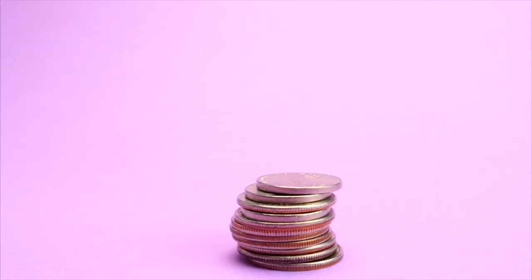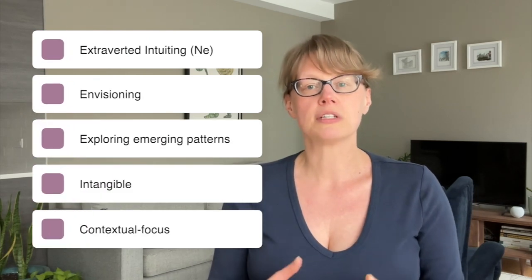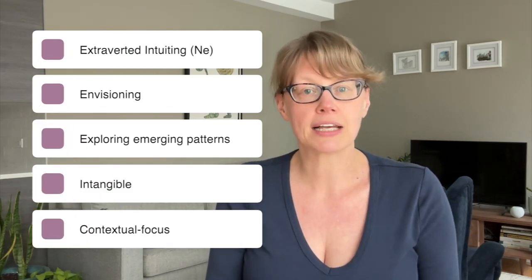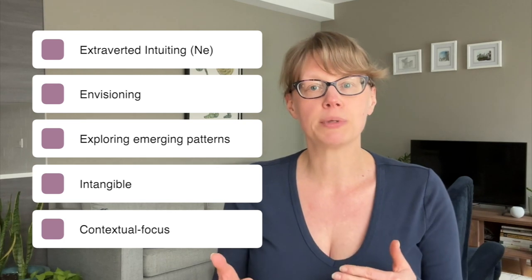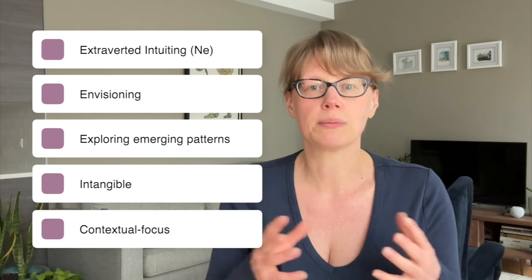Now pick one coin — once it leaves your possession, what could happen to it? You might say you use it for a parking meter, lose it, donate it, or use it to buy some candy. This is extroverted intuiting, also known as envisioning or exploring emerging patterns. This process uses an external focus but interprets what might happen, linking and connecting to what it might mean. Extroverted intuiting brings things in from another context.